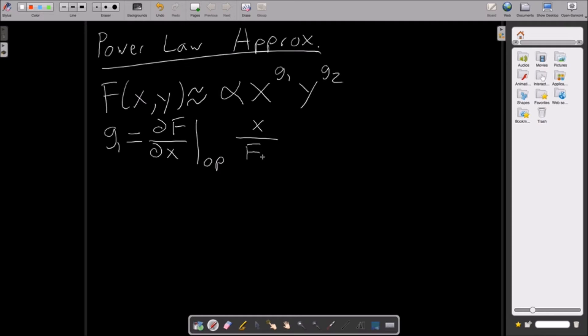So what's g2 then? What do you think g2 will be? If it has a similar format? Well, I would think that g2 would probably be the partial of f over the partial of y evaluated at the operating point times y over f. There you go. Yeah, nice.